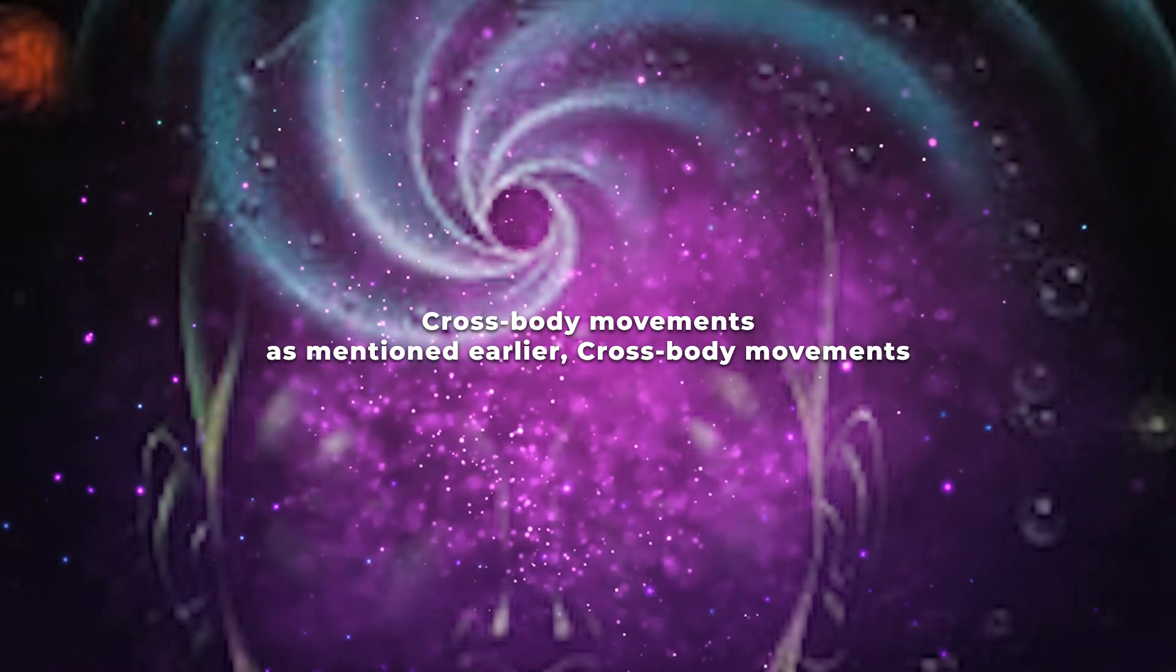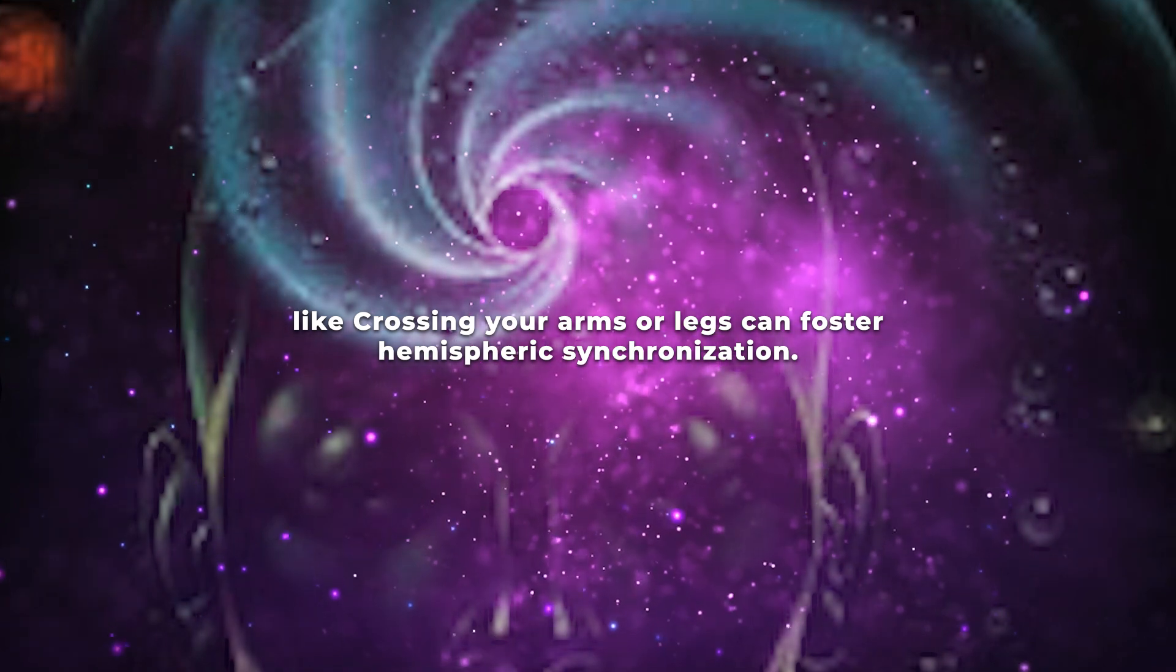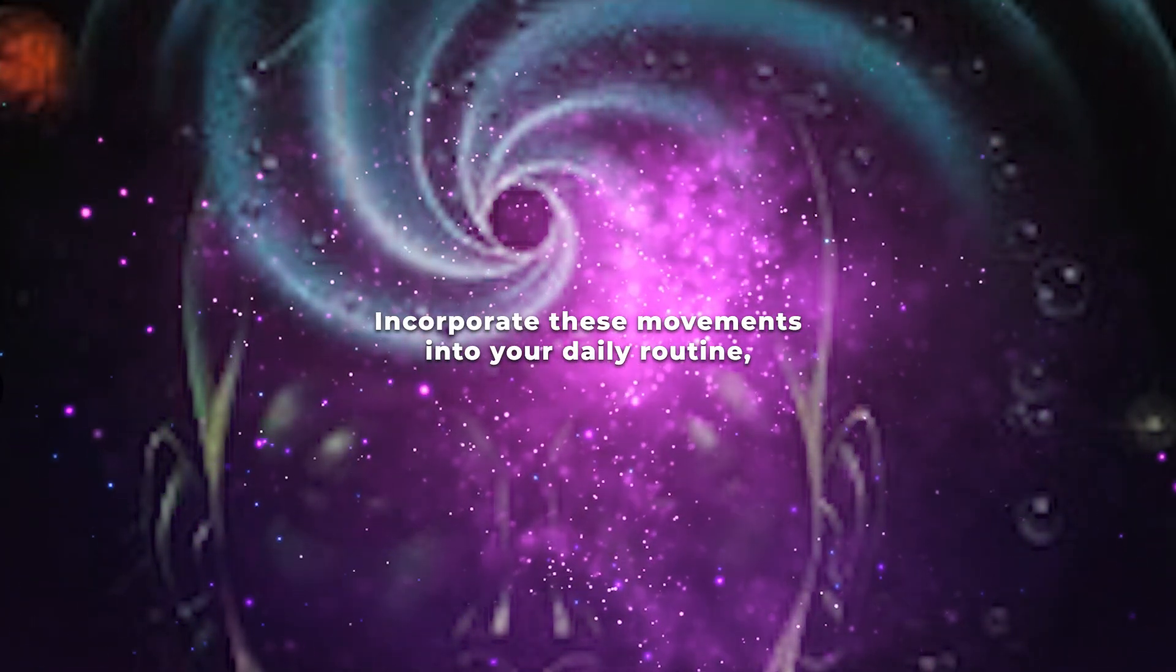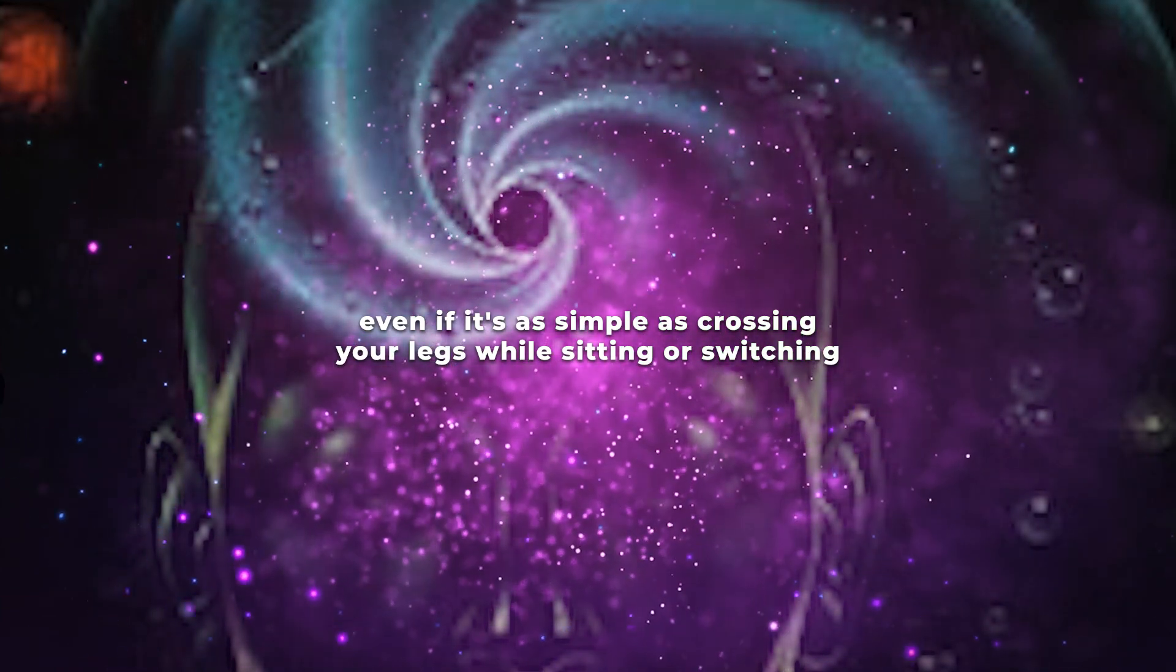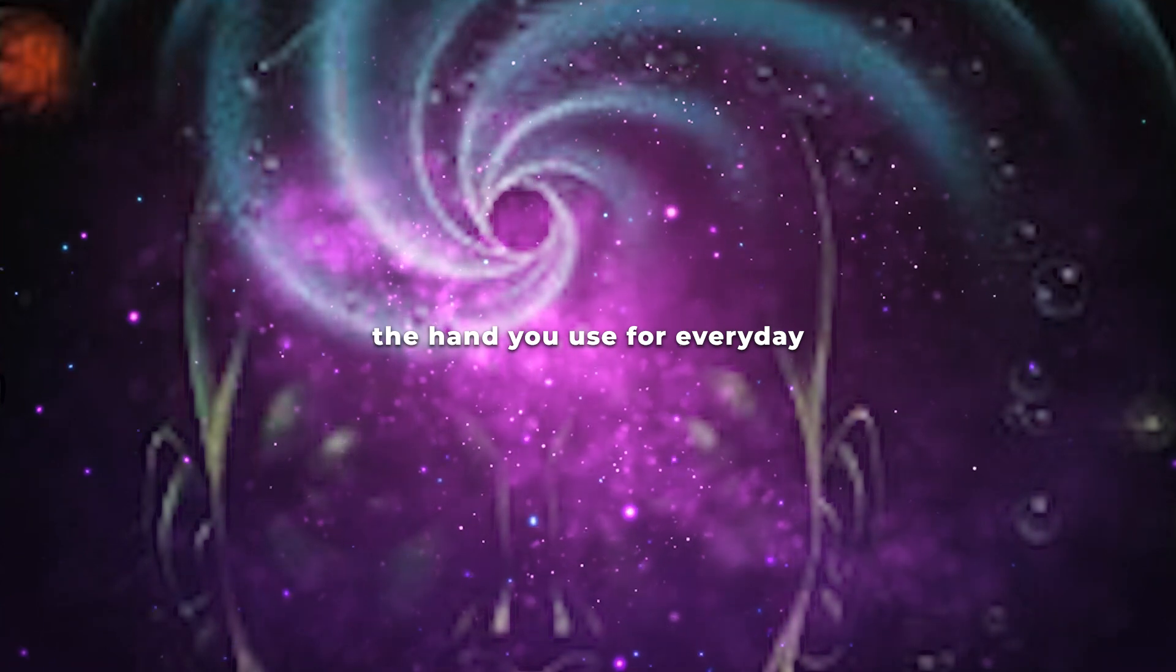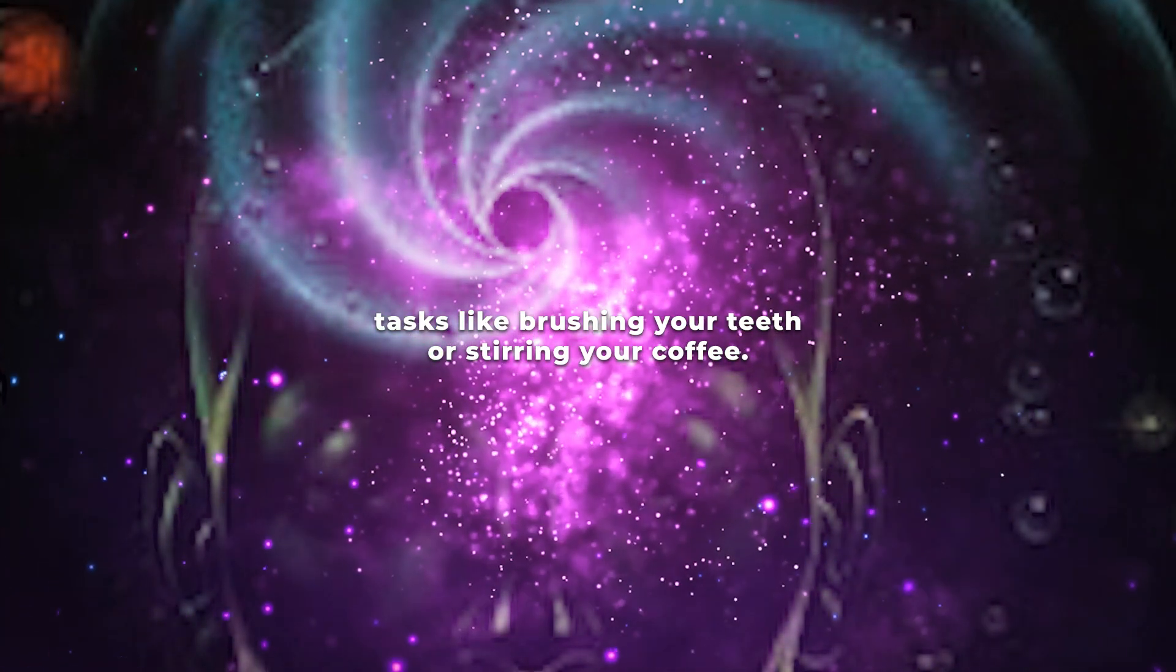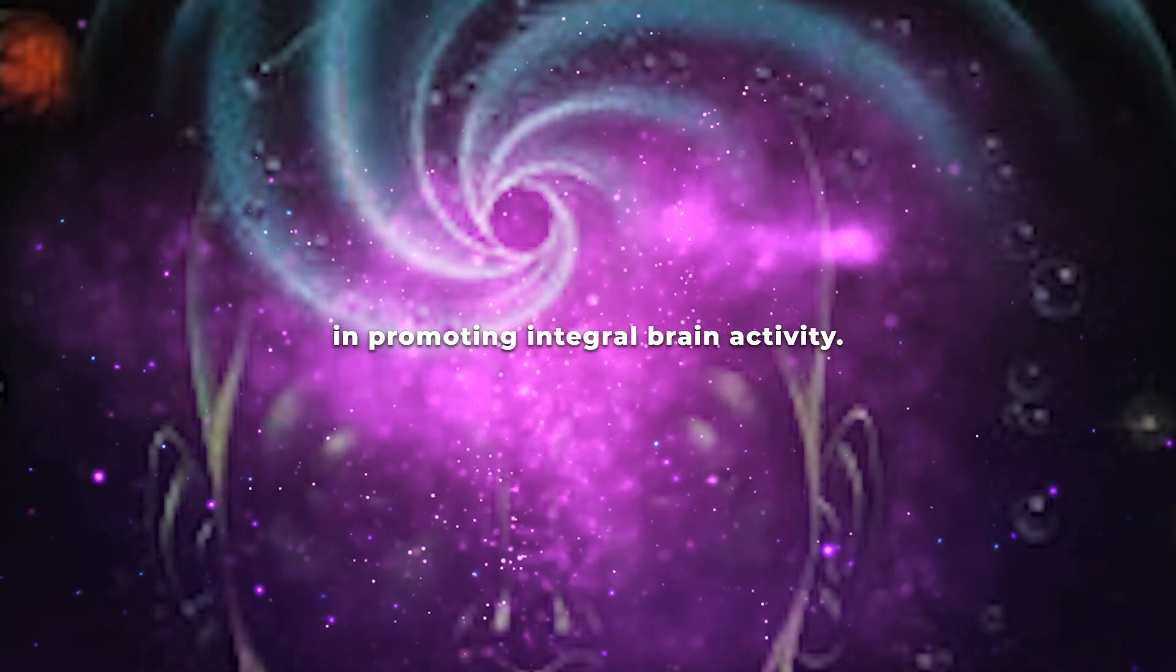Cross-body movements, as mentioned earlier, like crossing your arms or legs, can foster hemispheric synchronization. Incorporate these movements into your daily routine, even if it's as simple as crossing your legs while sitting or switching the hand you use for everyday tasks like brushing your teeth or stirring your coffee. These small adjustments can make a significant difference in promoting integral brain activity.